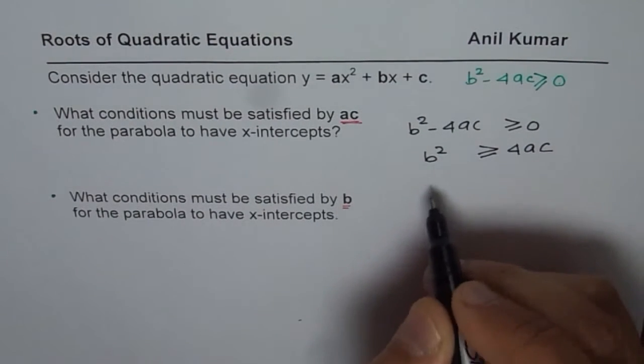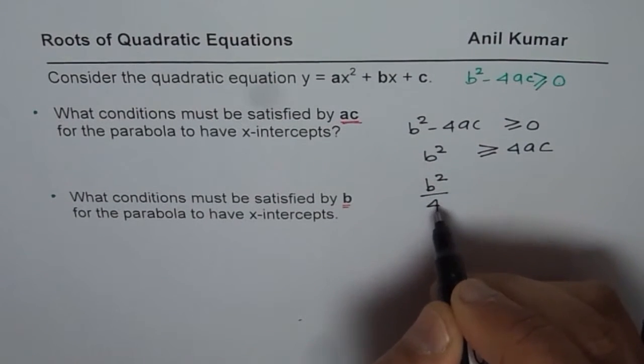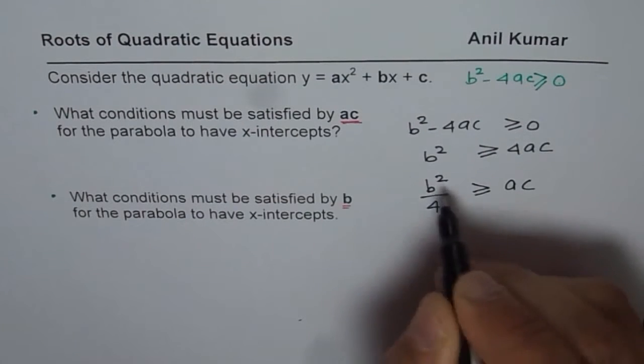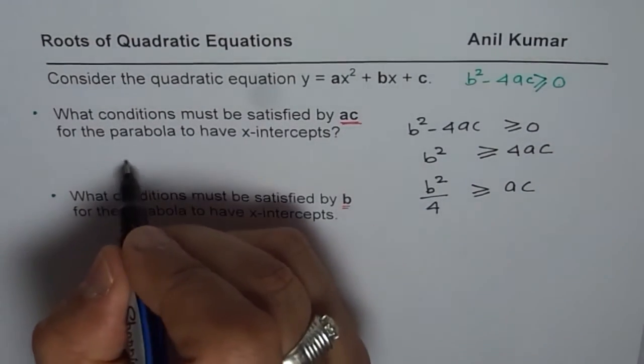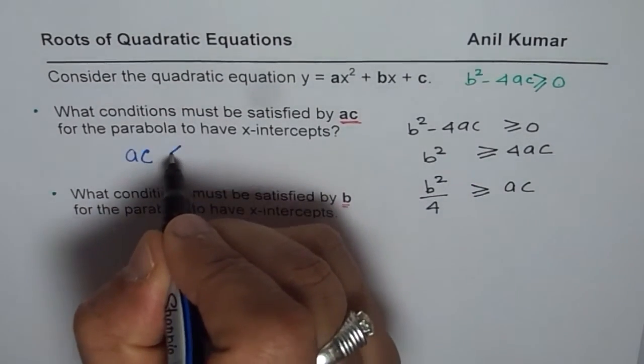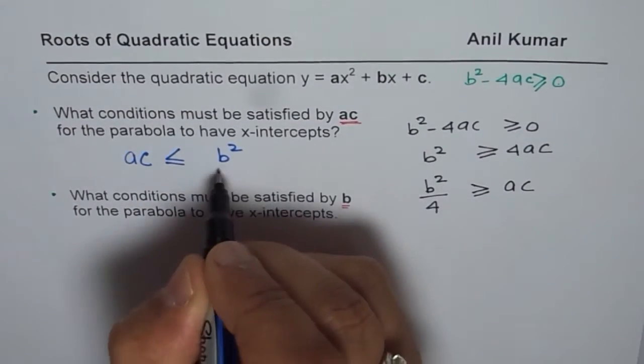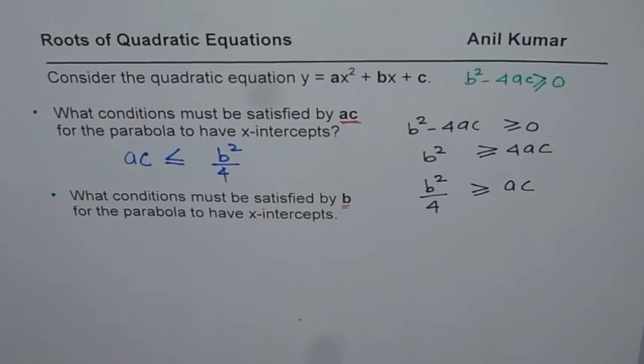Or dividing by 4, what I get is b square divided by 4 should be greater than or equal to ac. So that becomes the condition. I'm writing this condition here. So ac should be less than or equal to b square divided by 4. So one fourth of b square. That becomes the solution of part a.